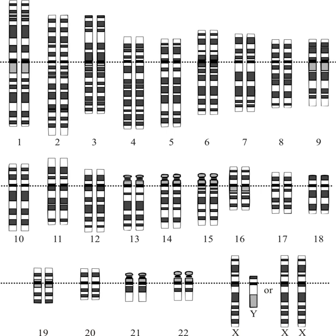The HapMap is a haplotype map of the human genome, which will describe the common patterns of human DNA sequence variation. It catalogues the patterns of small-scale variations in the genome that involve single DNA letters, or bases.